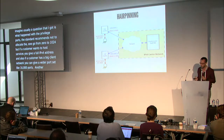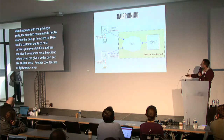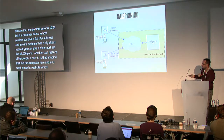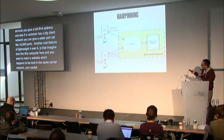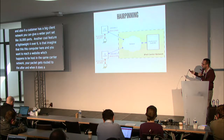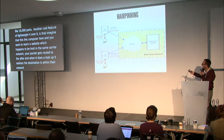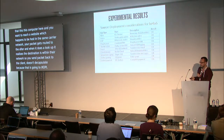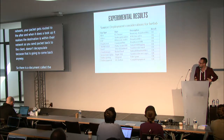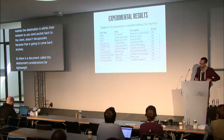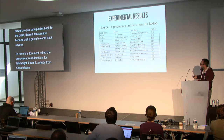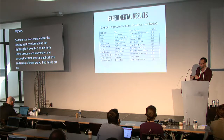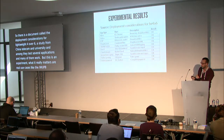Another cool feature of Lightweight 4 over 6 is hairpinning. Imagine you want to reach a website that happens to be hosted in the same carrier network. Your packet gets routed to the AFTR, and when the AFTR does a lookup and realizes the destination is within their network, it sends the packet back to the client rather than encapsulating and sending it to the internet. There is also a deployment considerations document — a study from China Telecom and Tsinghua University — that tests several applications. But what really matters are real use cases like what OTE is doing, deploying it in a production environment.